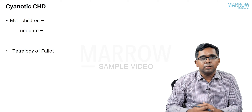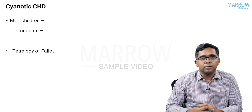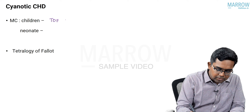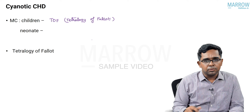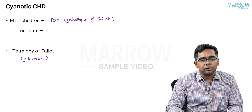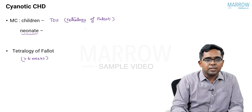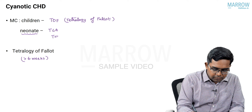Moving on to cyanotic congenital heart disease, the most common cyanotic congenital heart disease in children is TOF, which is tetralogy of Fallot. Importantly, TOF presents with cyanosis that usually starts after six weeks of birth. If the question asks about the most common cyanotic congenital heart disease in the neonatal period, the answer is TGA, which is transposition of the great arteries.